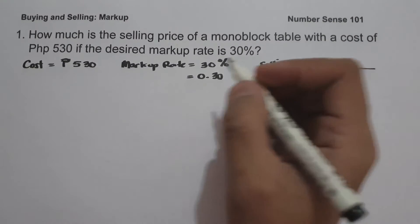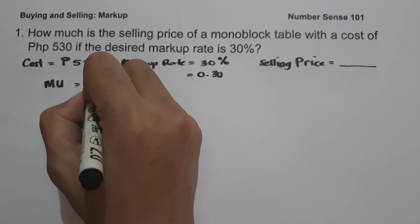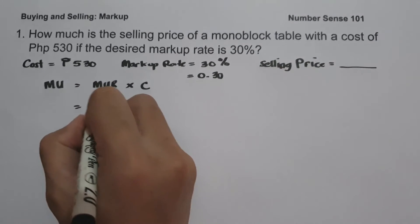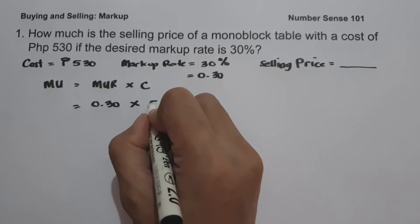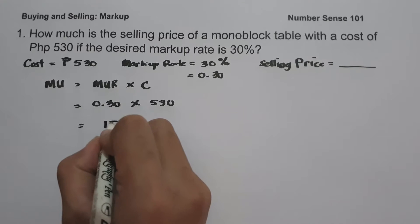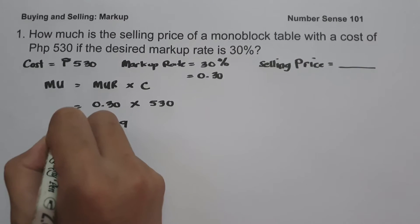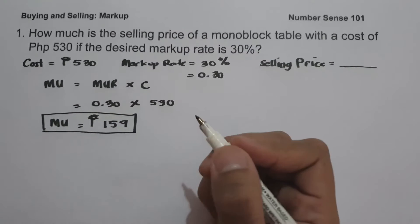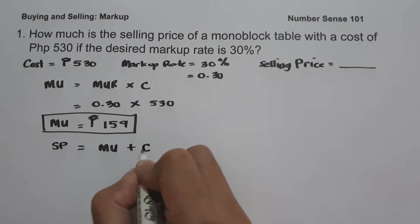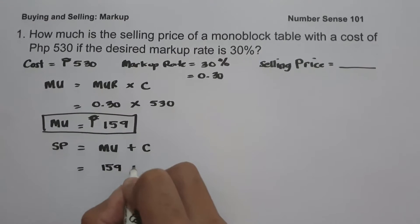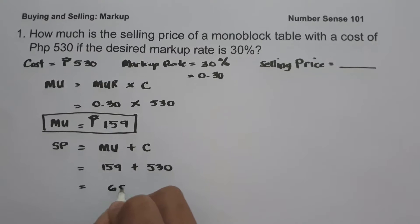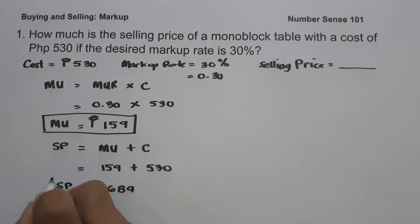To determine the selling price, let us use the formula: markup equals markup rate multiplied by cost. Our markup rate is 30 percent, or 0.30 in decimal, multiplied by cost that is 530 pesos. 0.30 multiplied by 530 gives us 159 pesos — so this will be our markup. To determine the selling price, we use: selling price equals markup plus cost. 159 pesos plus 530 pesos gives us 689 pesos. So this will be our selling price.